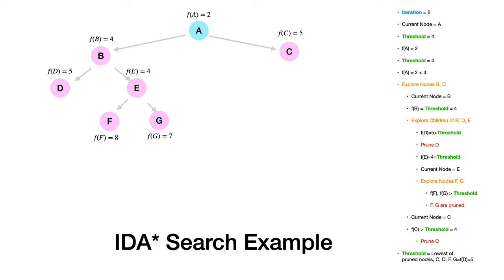In iteration 2, we start again from node A — just as in iterative deepening DFS, we always restart from the starting node. Threshold is now 4. F(A) = 2 is less than threshold, so we pursue it. F(B) = 4 equals the threshold, so we can still pursue B's children.